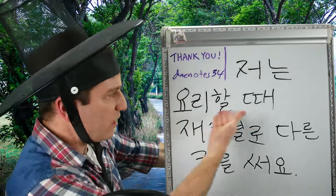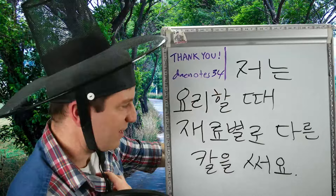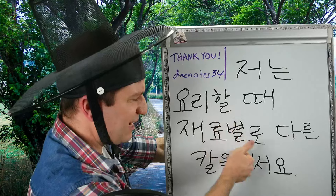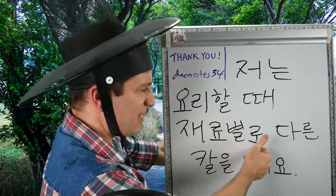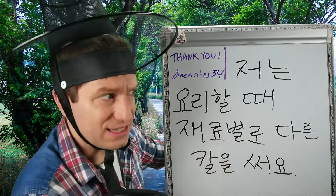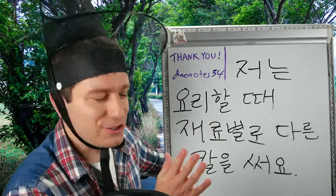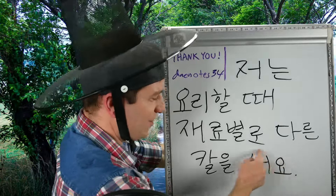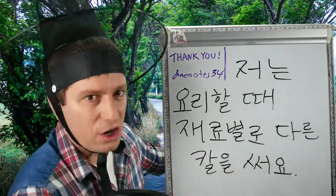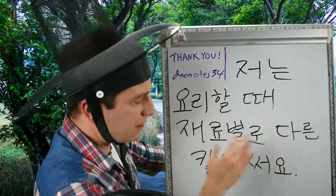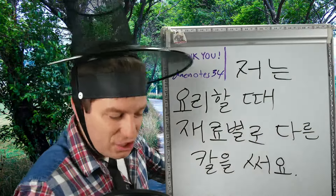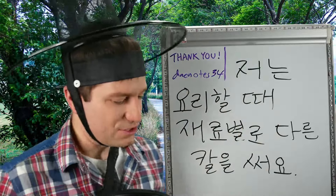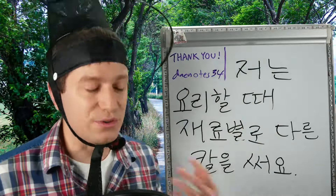저는 요리할 때 — when I cook — 재료 is an ingredient. 재료별로 — for each ingredient, or by ingredients, or depending on the ingredient. 다른 칼을 써요 — I use a different knife. So: when I cook, I use a different knife depending on the ingredients. 저는 요리할 때 재료별로 다른 칼을 써요.